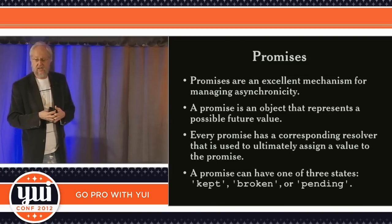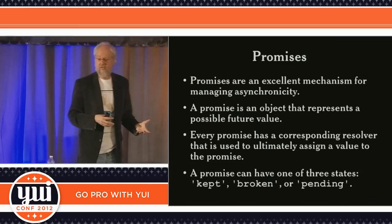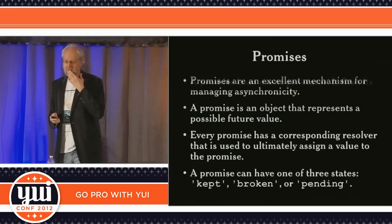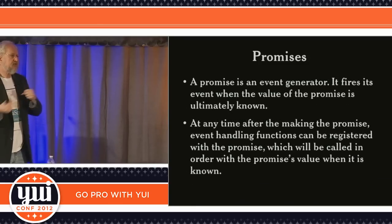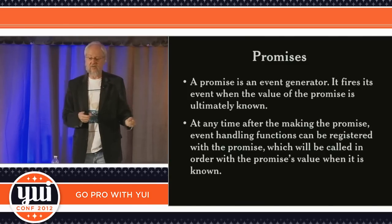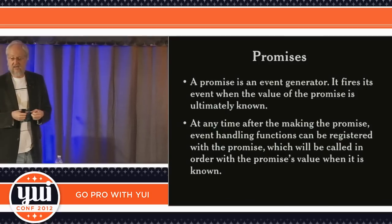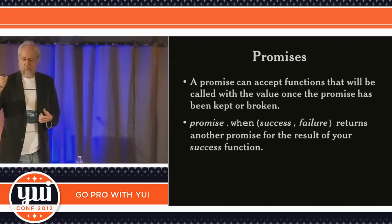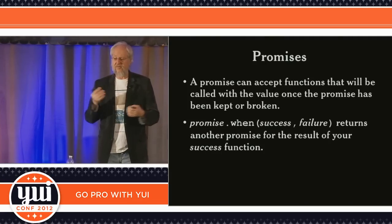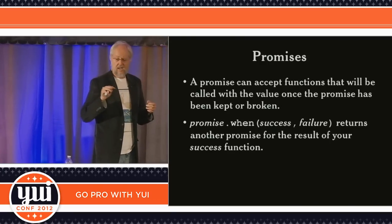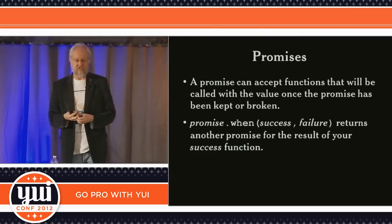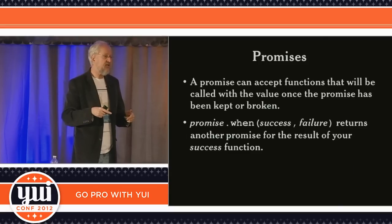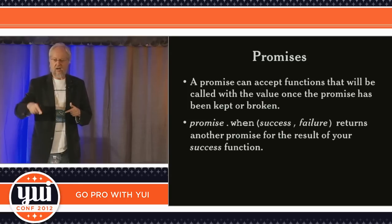A promise is a value that represents a possible future value. Promises were inspired by futures which fell out of the actor model. Every promise has a corresponding resolver used to ultimately assign a value to the promise. A promise at any moment can have one of three states: kept, broken, or pending. A promise is an event generator — you can register events with a promise, and it fires its event when the value of the promise is ultimately known. You register things with the promise using the when function: when the result is known, either call my success function or call my failure function. The when function itself returns a promise based on the result of the success function.